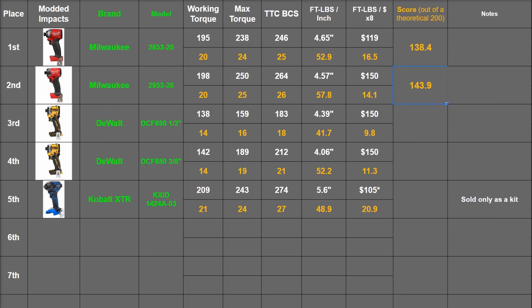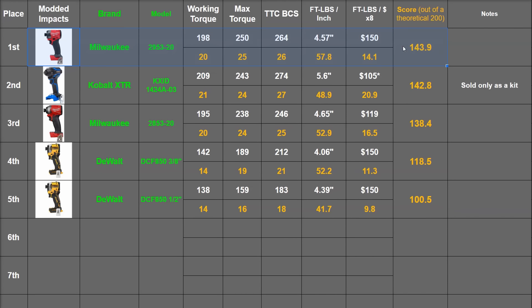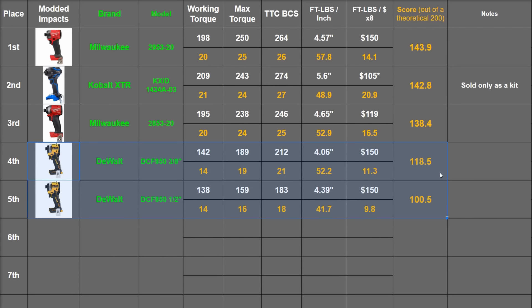That awards them totals of 138.4, 143.9, 100.5, 118.5 and 142.8, placing the newest model, the Gen 4, in first, followed by the XTR, with the three-eighths of course being the best version of the DeWalt.